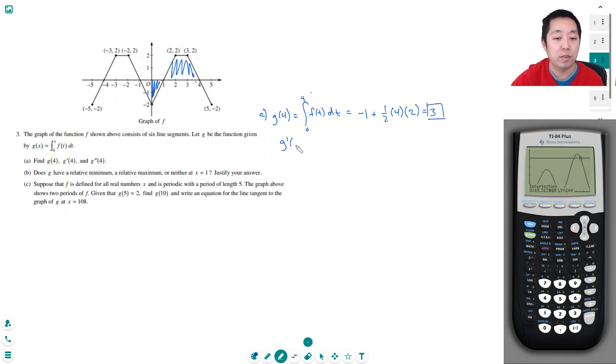g prime of x - well the derivative of this is just simply equal to f(x) by fundamental theorem of calculus. So I take the derivative of this kind of integral, I just get rid of the integral. So g prime of 4 is just equal to f of 4, and the value of the function at 4 is 0. So g prime of 4 is 0.